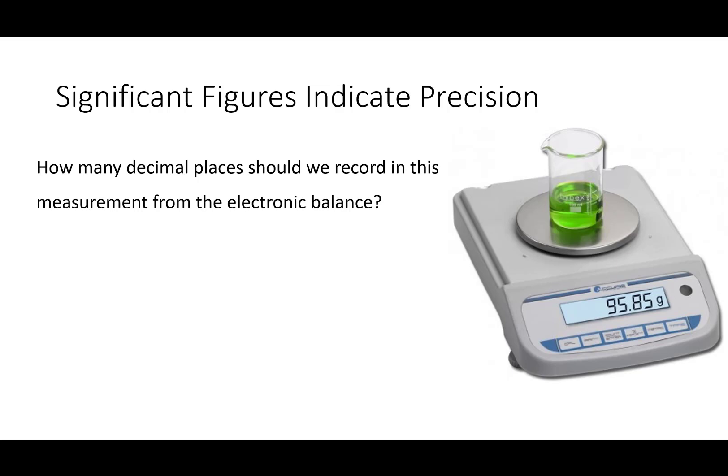How many decimal places should we record in this measurement from the electronic balance? And it reads the mass of this fluid in the container, in the beaker. It reads 95.85 grams. Well, here's the thing. We can't estimate an additional digit because this is an electronic instrument. It's already doing the estimations for us. We have to write it down as 95.85 grams. That's it.